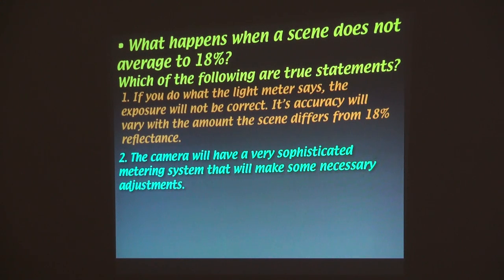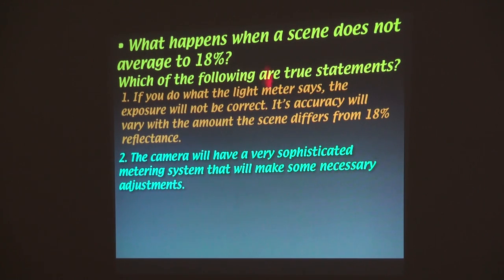Your camera has a thing called evaluative metering. Evaluative metering means the camera is looking at the differences — the camera's using about 80% of the frame and it's making a correction for you. That's the metering mode.